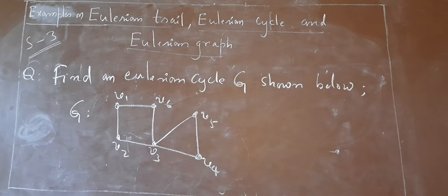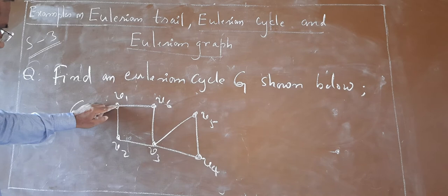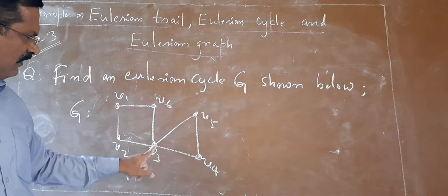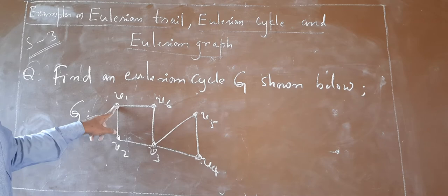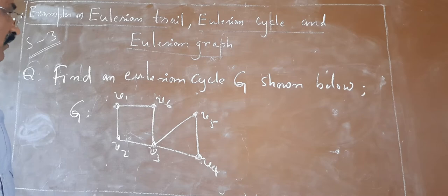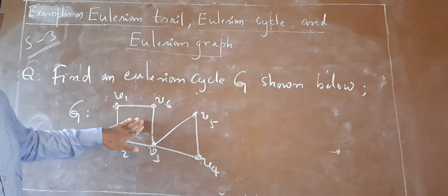First of all, whether it is an Eulerian graph. If I start at V1 and trace: V2, V3, V4, V5, V3, V6, V1 — starting and ending icons are the same. So it contains an Eulerian cycle, and that's why it is an Eulerian graph. Our aim is to find out an Eulerian cycle from this graph.